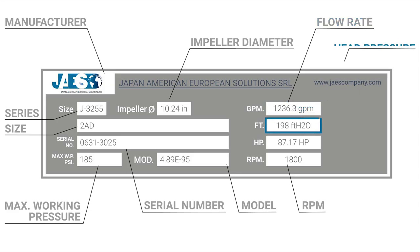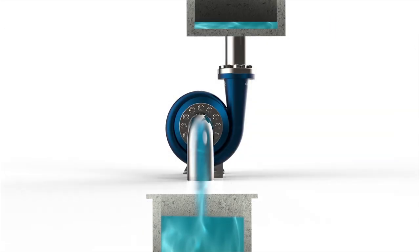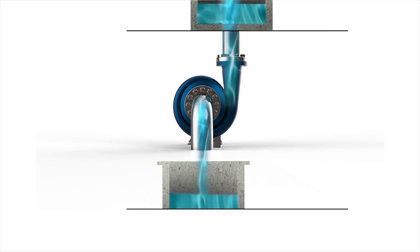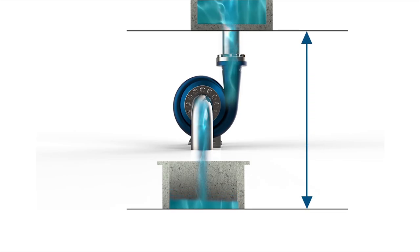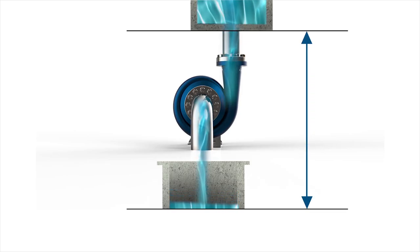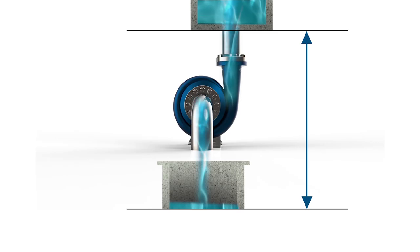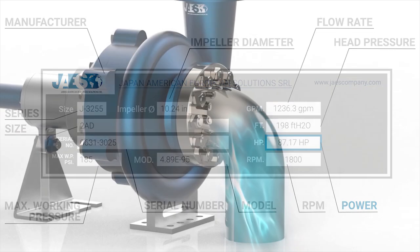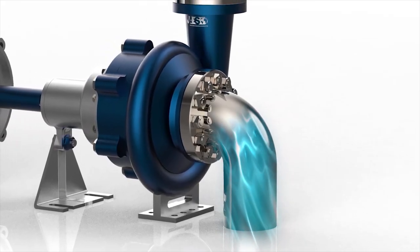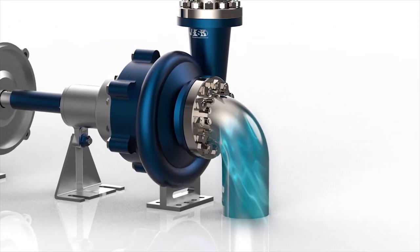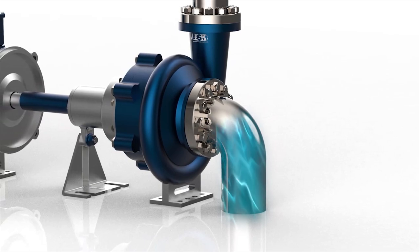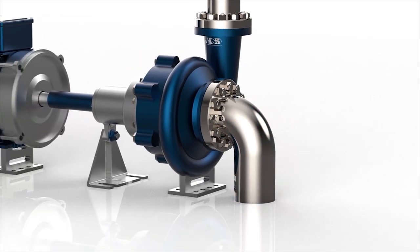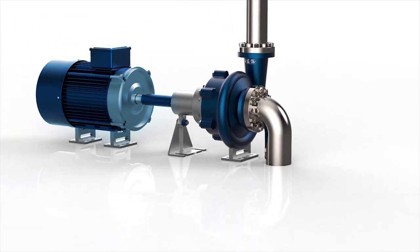We can simply define the head pressure as the ability of a pump to elevate a certain volume of fluid to a certain height. This value depends on the suction head of the pump, so it changes if the RPM is increased or decreased. The pump power is the power consumed by the pump in order to move and increase the pressure of a fluid. The power requirements of the pump depend on a number of factors, including its motor efficiency.